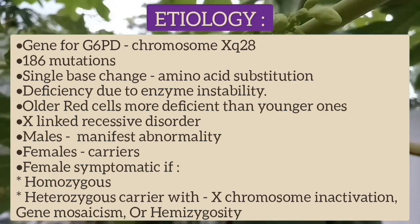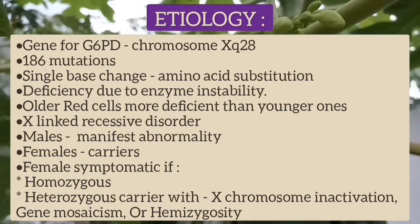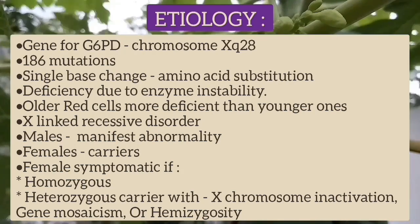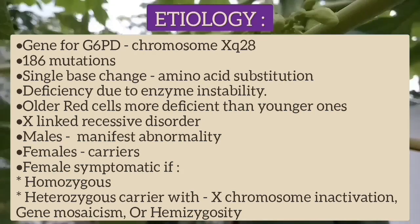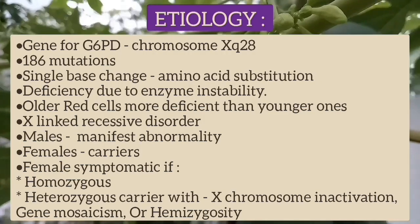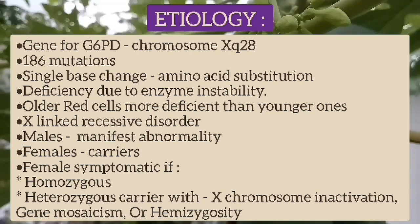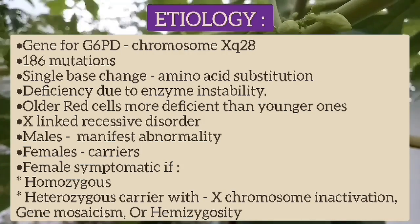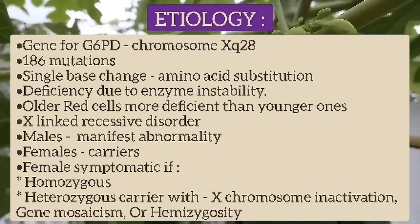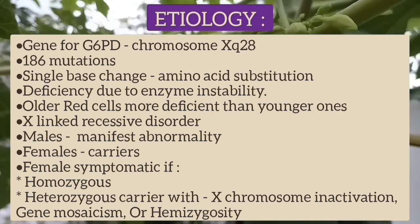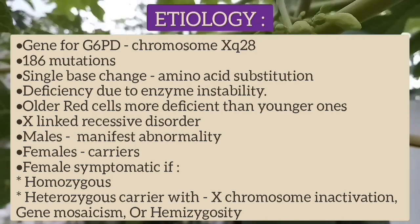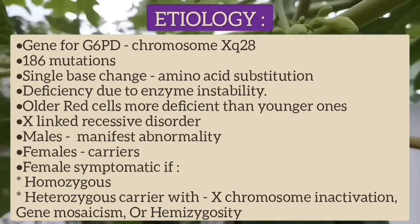The gene that codes for G6PD is located in the distal long arm of the X chromosome at the XQ28 locus. Currently 186 mutations in the G6PD gene have been documented, and most are single-base changes that result in an amino acid substitution. In most instances, the deficiency is due to enzyme instability, so older red blood cells are more deficient than younger ones. G6PD is inherited as an X-linked recessive disorder, so males usually manifest the abnormality and females are the carriers. Females may be symptomatic if they are homozygous, and heterozygous women can manifest the disease if there is X chromosome inactivation, gene mosaicism, or hemizygosity.